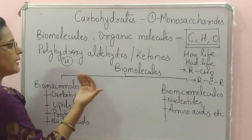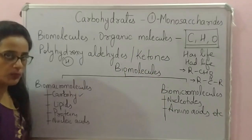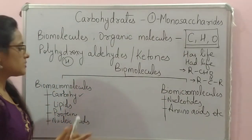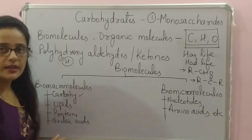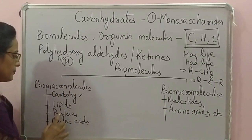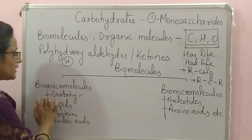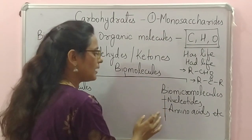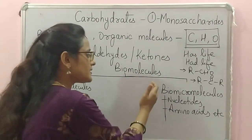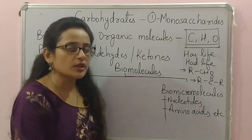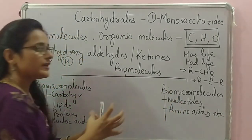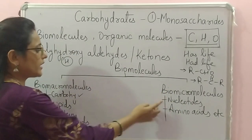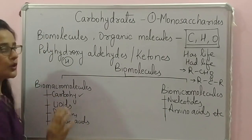Biomolecules are of two types: biomacromolecules and biomicromolecules. Biomacromolecules are the big, complex molecules required for the sustenance of life — these are carbohydrates, lipids, proteins, and nucleic acids. We will cover carbohydrates first. Biomicromolecules are nucleotides, amino acids, etc. These are the small molecules also required for the sustenance of life, and when they come together they polymerize to form the complex molecules. That is, nucleotides form nucleic acids and amino acids form proteins.